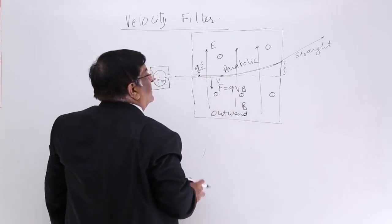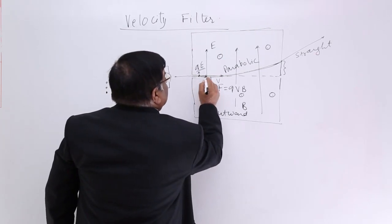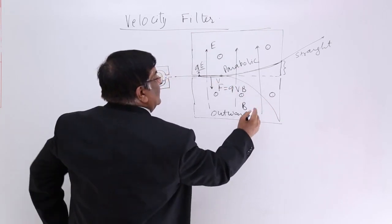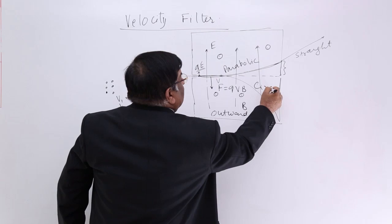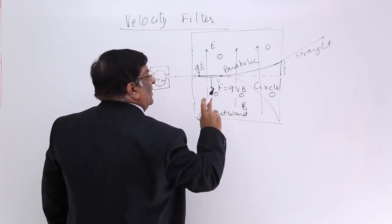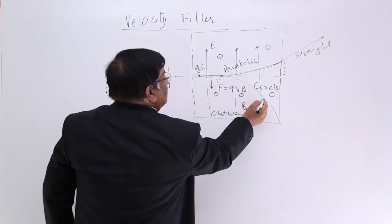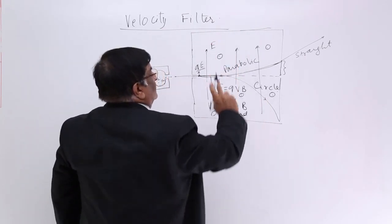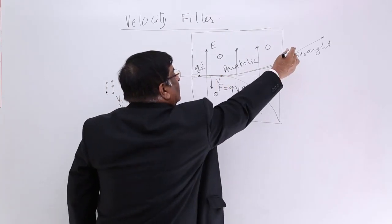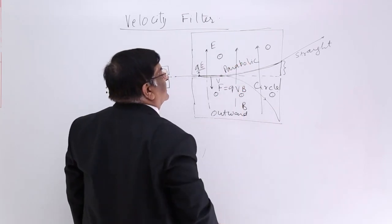This force is downward. Now suppose there is no electric field. What will happen to this charge? This charge, because of this, will make a circle and come here. This is circle. This is due to magnetic field, and you have seen because of magnetic field a charge will make a circle. Now we have both the fields together. If there is only electric field, charge will go like this. If there is only magnetic field, charge will go like this. And now if we have both the fields, then what will happen?